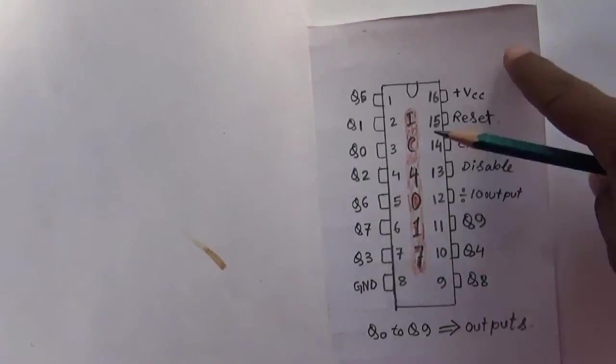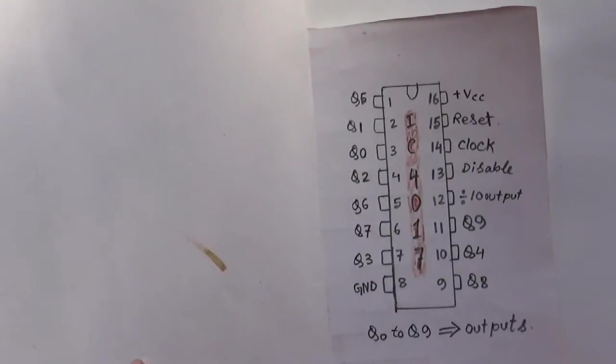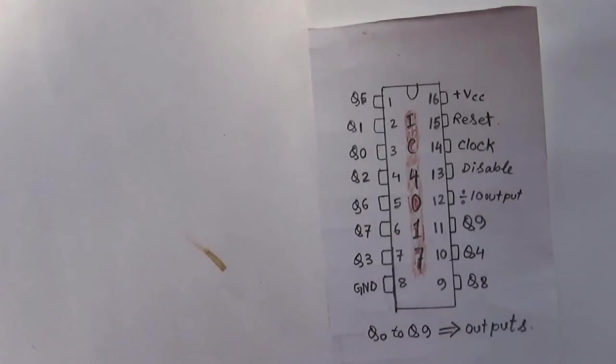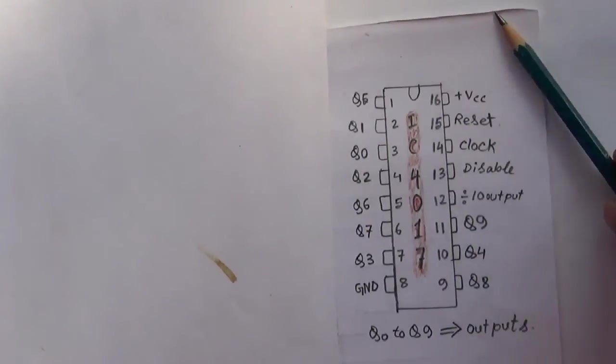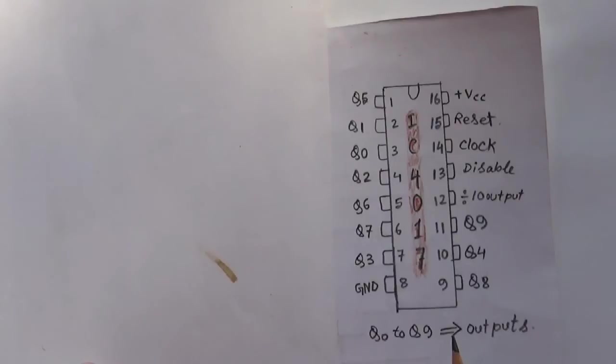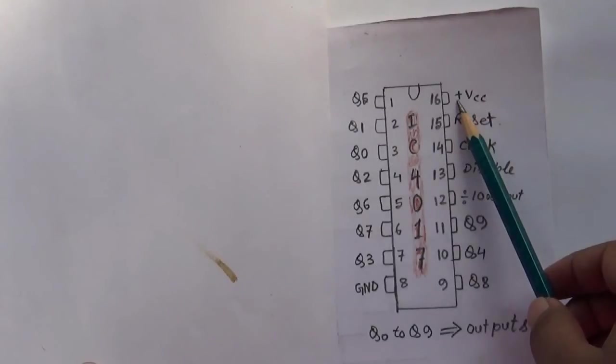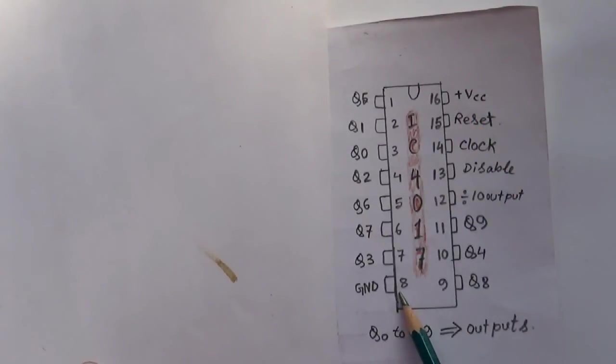Welcome to my video. This is a pin configuration of IC4017. Actually, we should know first what you have to do to enable this IC. It is a plus VCC and it is a ground. If you keep the supply, I have to take some necessary steps.